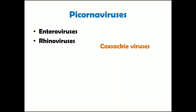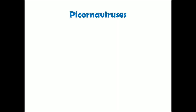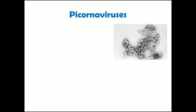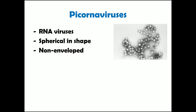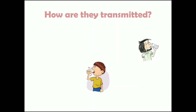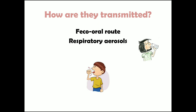Coxsackieviruses come under Enteroviruses. The general description of Picornaviruses: they are RNA viruses, spherical in shape, non-enveloped, and they have viral proteins in their capsid. The most common route of transmission is the fecal-oral route — when you drink contaminated water containing viral particles, you can get the infection. The other common route is by respiratory aerosols spread in respiratory droplets from infected patients.